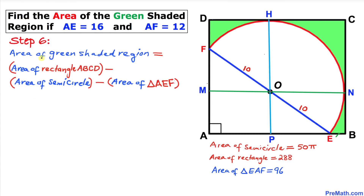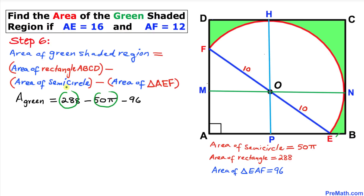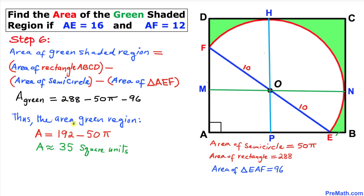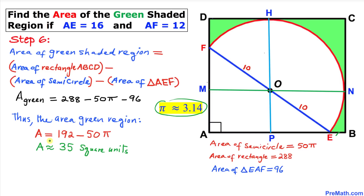For the final step, the green area equals the area of rectangle ABCD minus the area of the semicircle minus the area of the triangle: 288 minus 50π minus 96, which simplifies to 192 minus 50π. Replacing π with 3.14, the green area is approximately 35 square units.